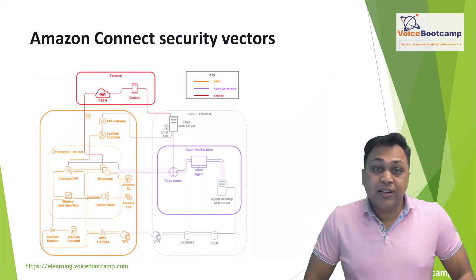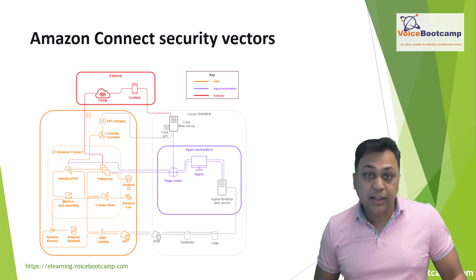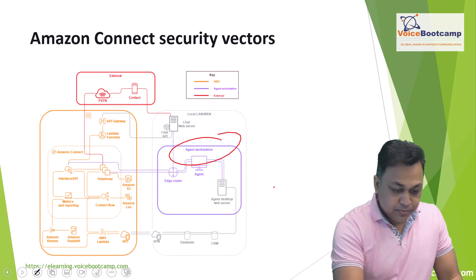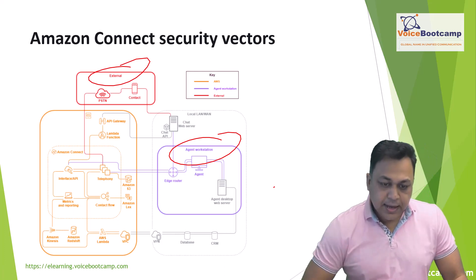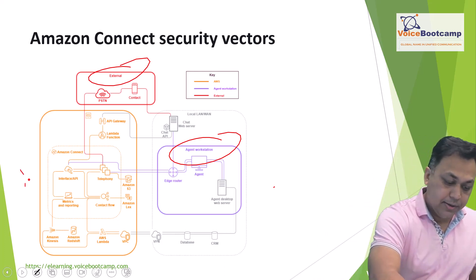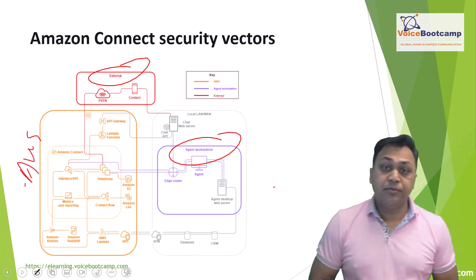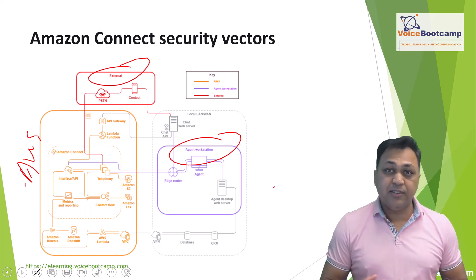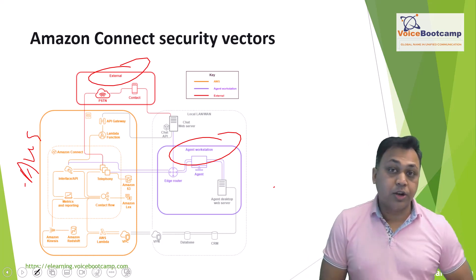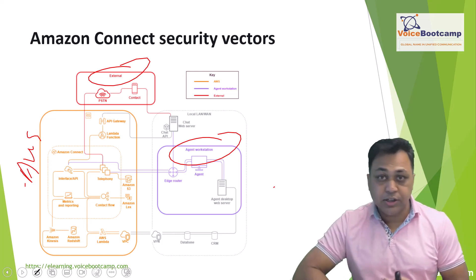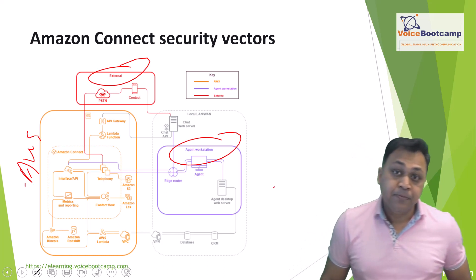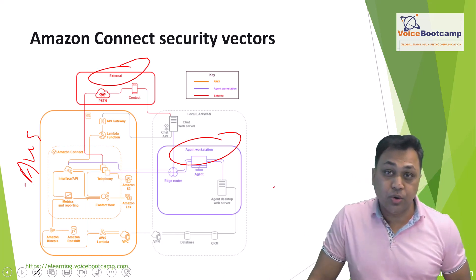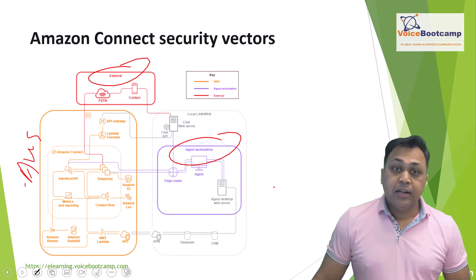From a security perspective, Amazon Connect security can be divided into three logical layers. You have the agent workstation layer, the external layer, and the AWS layer. Each layer has different levels of requirements. The agent workstation layer is not managed by AWS because these are PCs or devices used by agents working from on-premise, off-premise, or remote locations such as home. These could be third-party services or endpoints that facilitate the agent's voice, data, and access to the Amazon Connect interface.